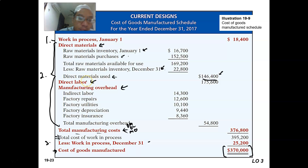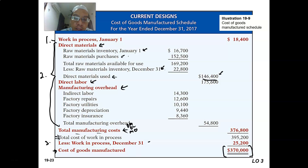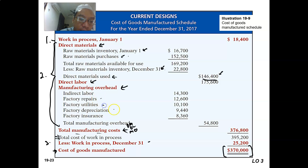Direct labor is much more straightforward. You have the direct labor cost — whatever salary is paid or incurred for the direct labor — and that will be part of the cost of the period. Then you have manufacturing overhead, with several examples: indirect labor, factory repairs, utilities, depreciation, and insurance. These are examples of manufacturing overhead.